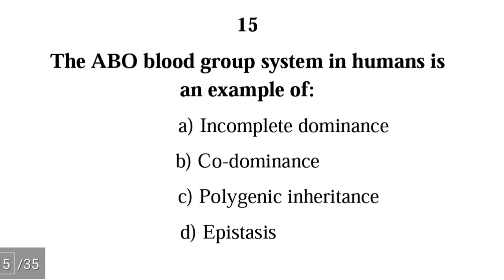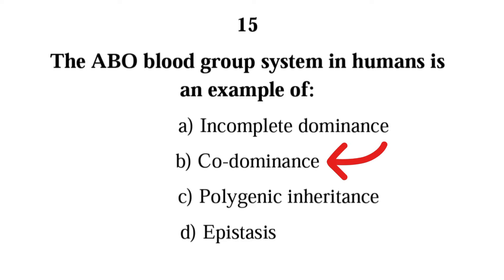Number fifteen: the ABO blood group system in humans is an example of — incomplete dominance, co-dominance, polygenic inheritance, or epistasis. The correct answer is B, co-dominance. In co-dominance, both alleles are fully expressed.